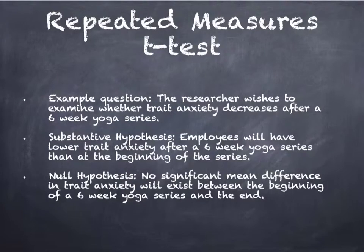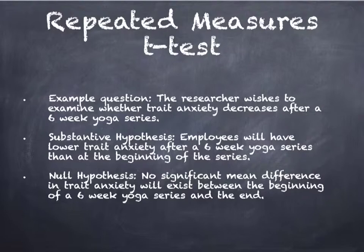Now, a parametric repeated measures t-test example. The research question is: the researcher wishes to examine whether trait anxiety decreases after a six-week yoga series. The substantive hypothesis is that employees will have lower trait anxiety after the six-week yoga series than at the beginning. The null hypothesis is: no significant mean difference in trait anxiety will exist between the beginning and end of the six-week yoga series.